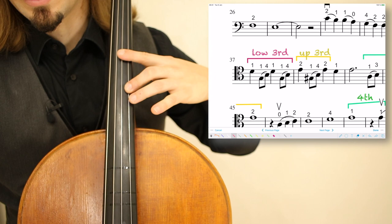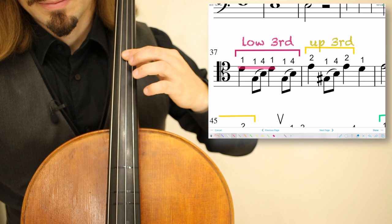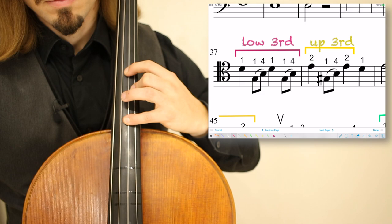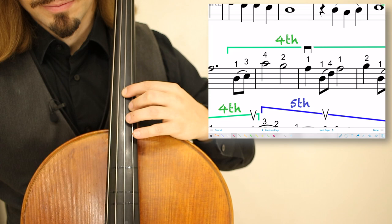In order to make that possible from 37 to 38, you have to keep your hand extended. You have to bar one across the D and the G. Shifting back up to fourth position for the A, B, G, F natural.